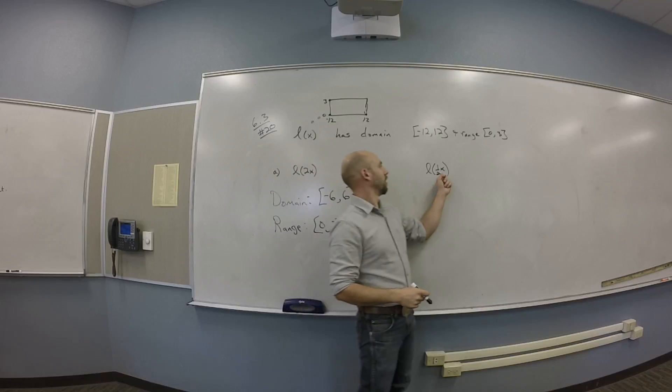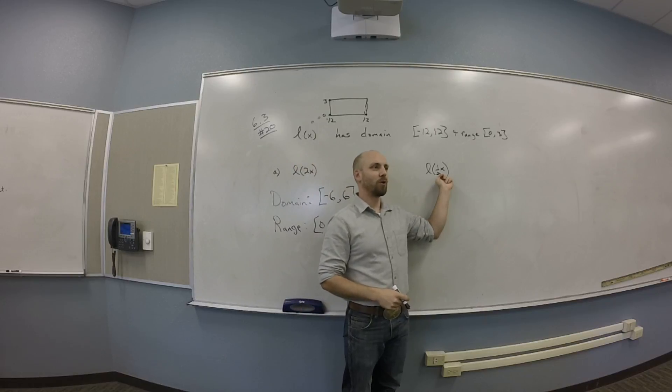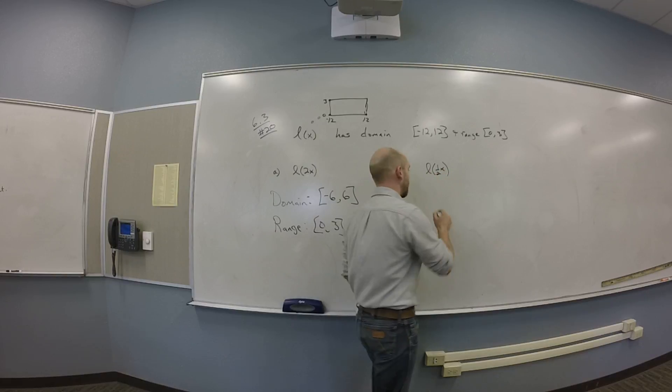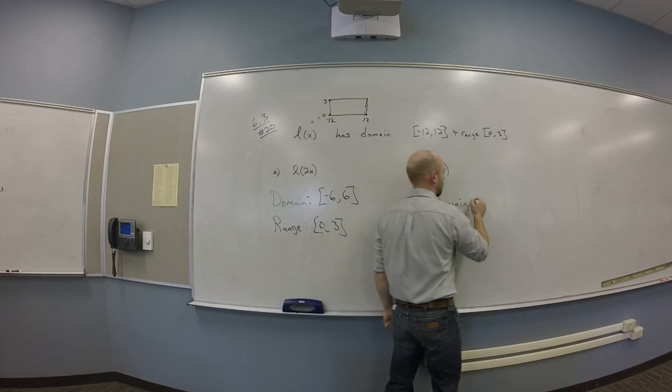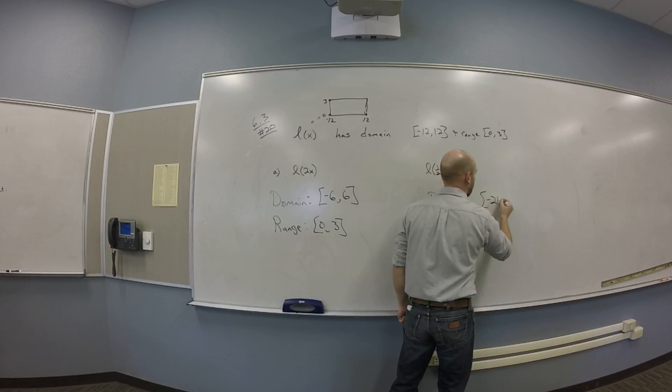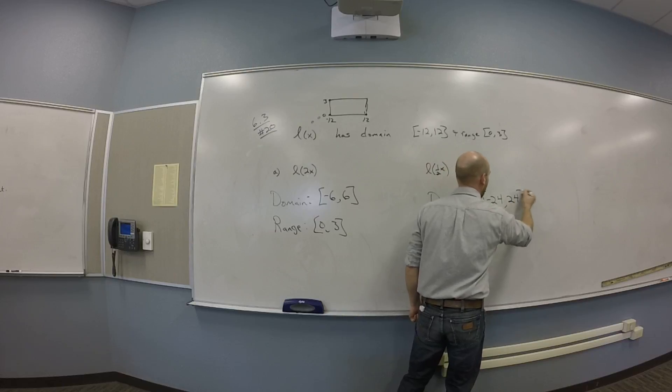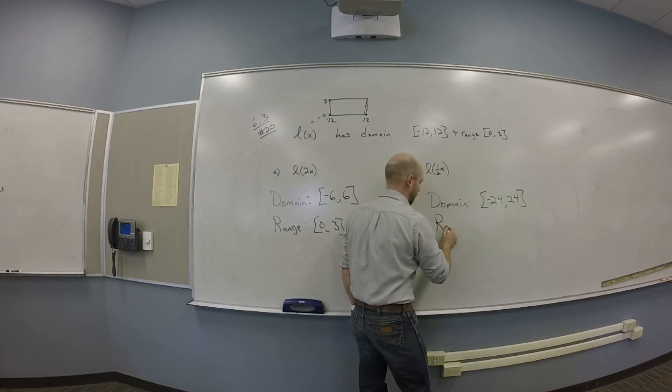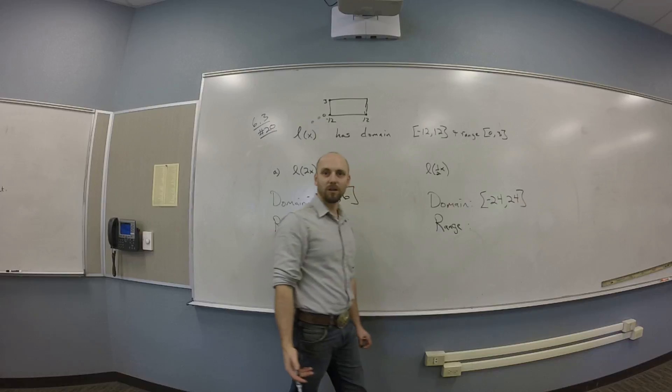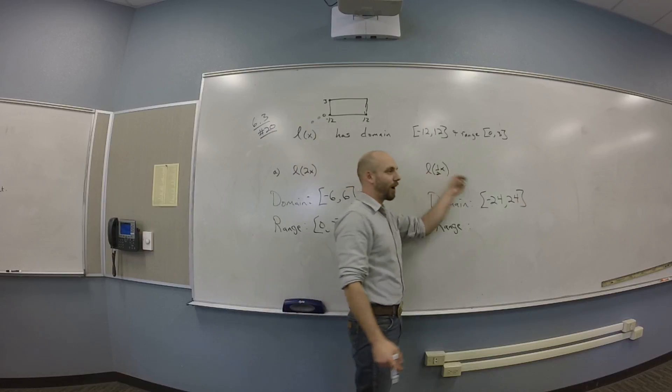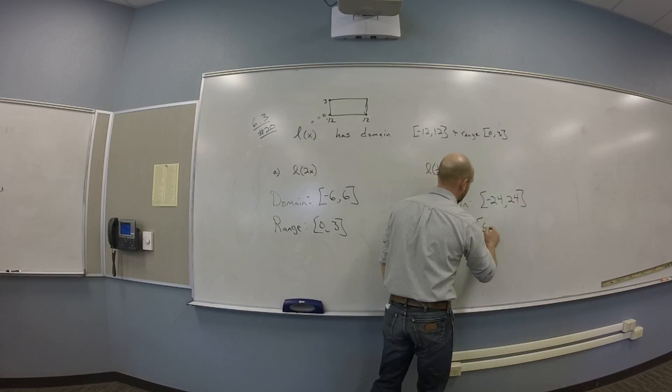So here, I might think about if I'm putting in 1 half X into L, I'm burning my X's half as fast. So what's the domain going to be there? Negative 24 to 24. Perfect. So your domain's going to be negative 24 to 24. And what about the range? We didn't change anything about the Y's. I didn't do anything after L. So I'm still going to get 0 to 3.